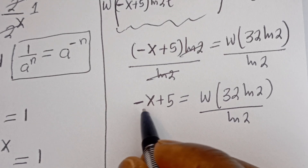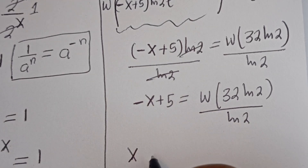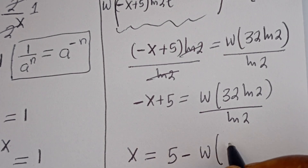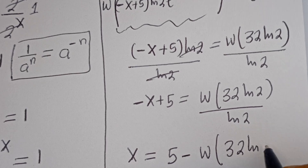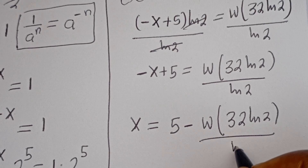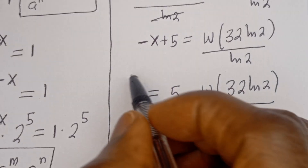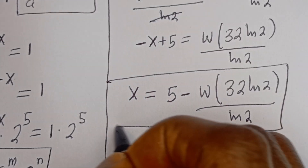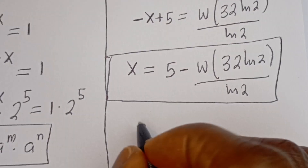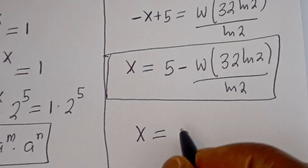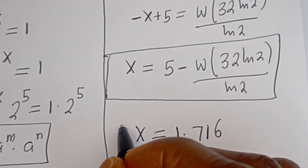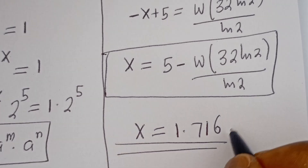This is the final answer. Therefore, x is equal to 5 minus W(32·ln 2) divided by ln of 2. If you plug this into a Lambert W function calculator, x will be equal to approximately 1.716. This is the final answer if you want to use a calculator.